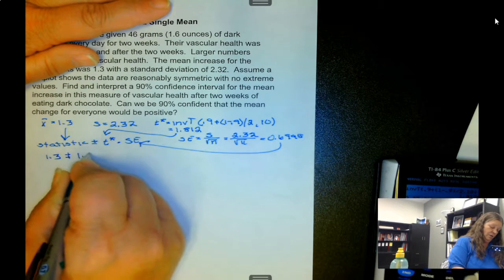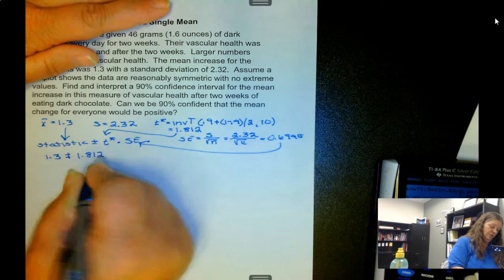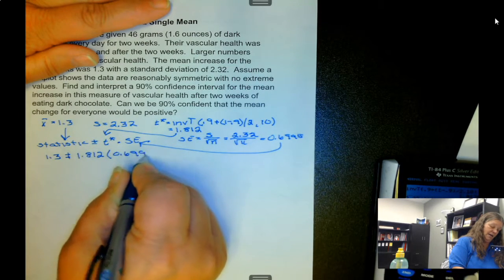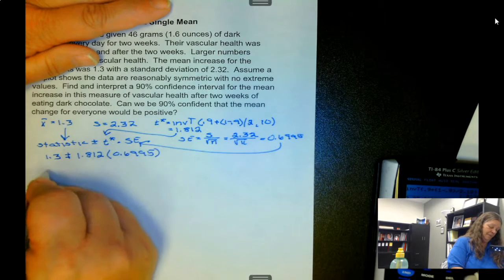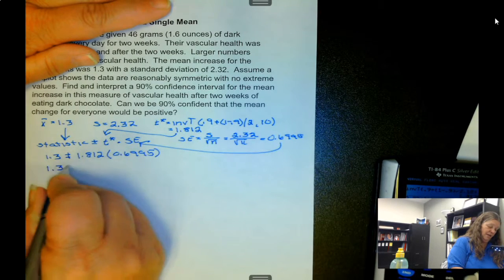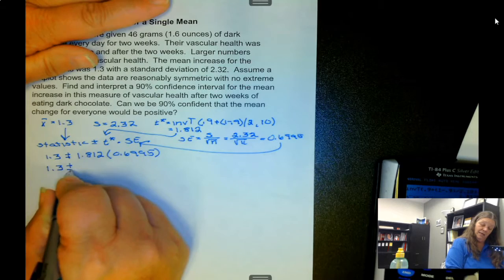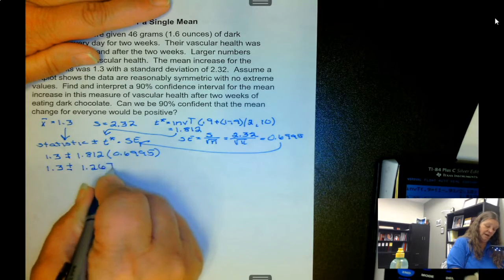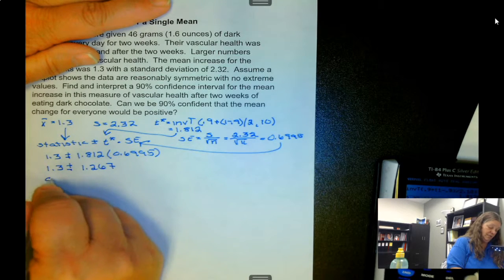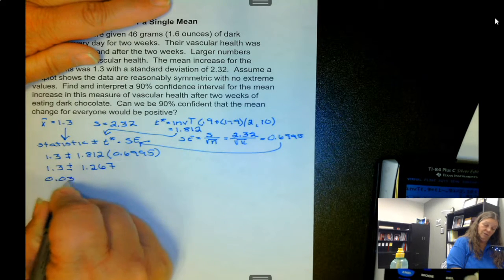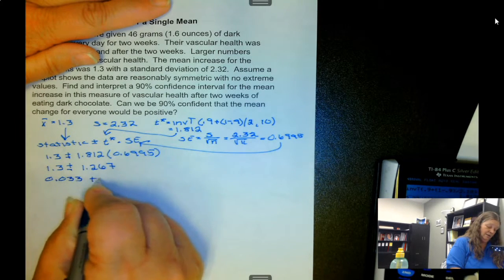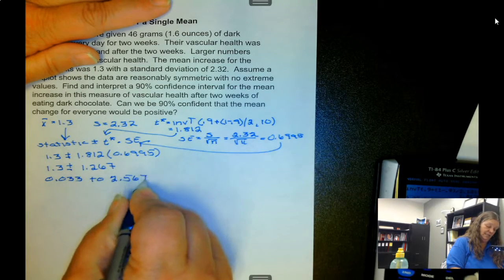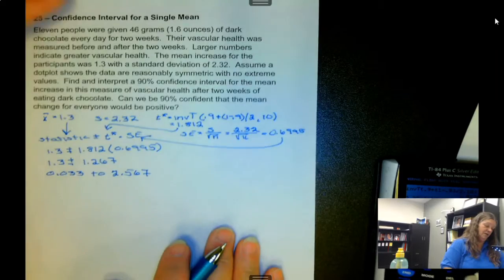So that's our standard error. So we have 1.3 plus or minus 1.812 times 0.6995, so it's 1.3 plus or minus 1.267, which gives us 0.033 to 2.567.